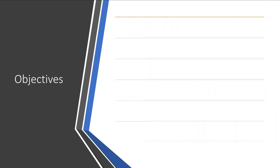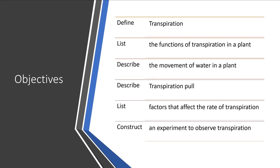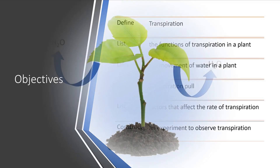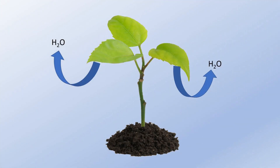Today we're going to be focusing on transpiration. In addition to transpiration, we'll also be looking at a list of objectives relevant to the movement of water within a plant. We just learned that transpiration was the loss of water vapor from leaves.